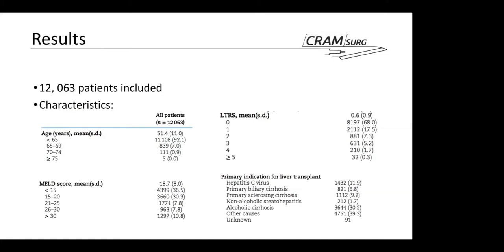In the timeframe the authors consider, 12,063 patients underwent liver transplant and were considered eligible for this study. Looking at the baseline characteristics, the patient profile would probably fit the average liver transplant patient in terms of age and primary indication. EPC and alcoholic cirrhosis appear to be the two predominant etiologies for liver failure. MELD score and LTRS are also reported, and the vast majority of patients included had a score of one or two, with far fewer considered high risk at four or five.